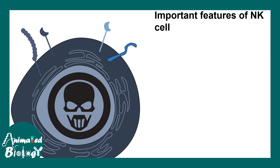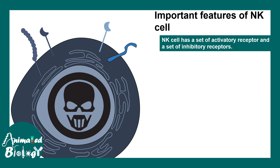There are important features that distinguish natural killer cells from other cell types. They are a component of the innate immune system, and they have a set of activatory receptors and a set of inhibitory receptors.